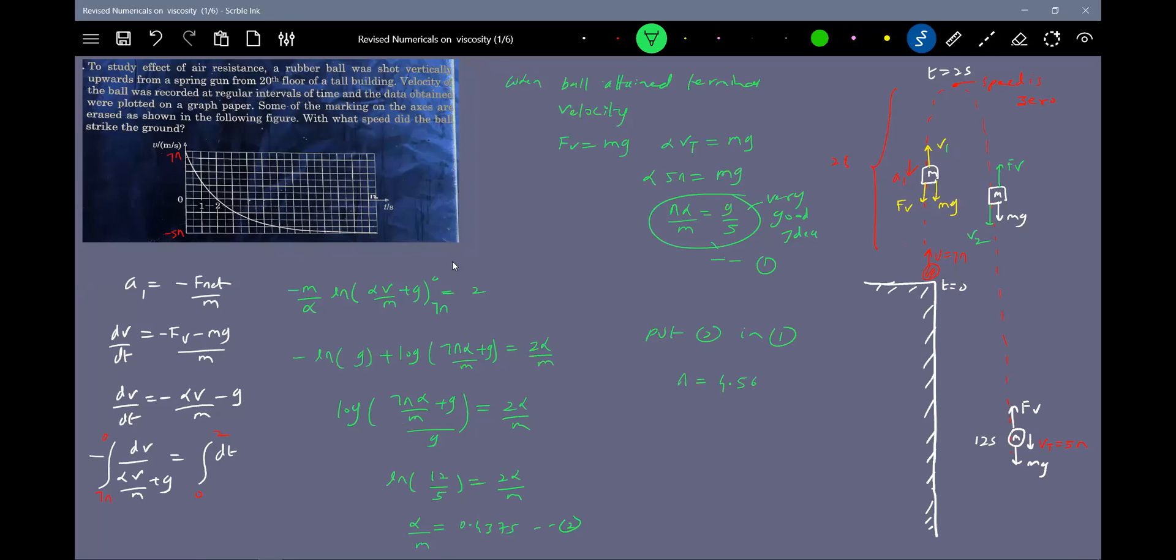I get 4.569 up to three decimal places. So what is the initial velocity? 7n equals 7 times 4.569, which equals 31.985 using the calculator. But what does the question ask? Not the initial speed of projection, but the terminal velocity, which should be 5 times 4.569, which equals 22.854 meters per second.